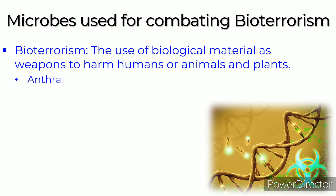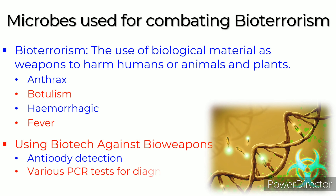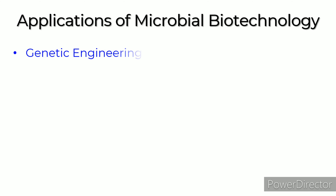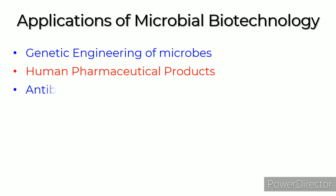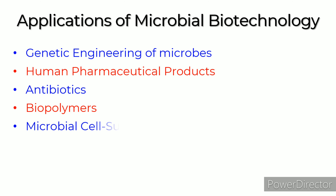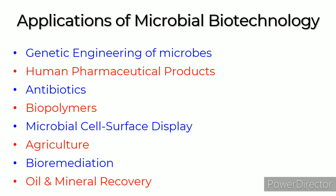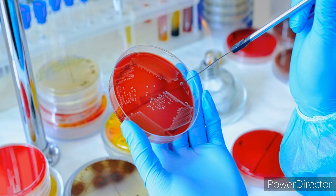Bioterrorism is the use of biological material as weapons to harm humans, animals, and plants. Examples include anthrax, botulism, and hemorrhagic fever. Biotechnological tools like antibody detection and various PCR tests can be used for diagnosis to combat bioweapons. Applications of microbial biotechnology include genetic engineering of microbes, human pharmaceutical products, antibiotics, biopolymers, microbial cell surface display, agriculture, bioremediation, and oil and mineral recovery.